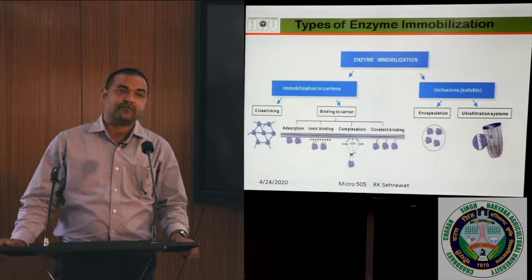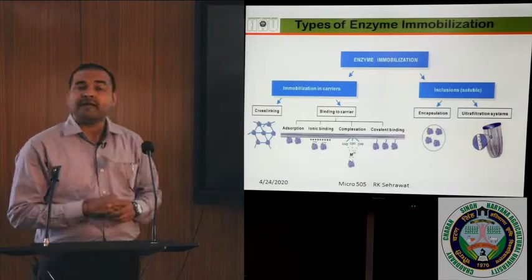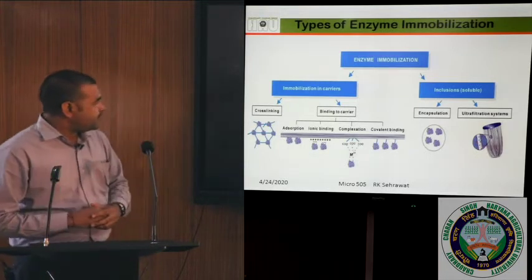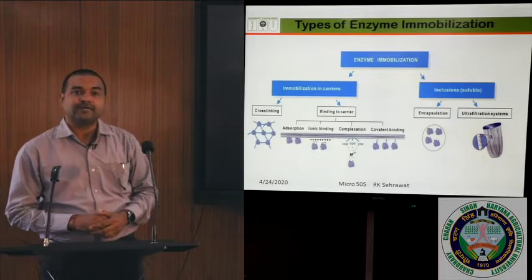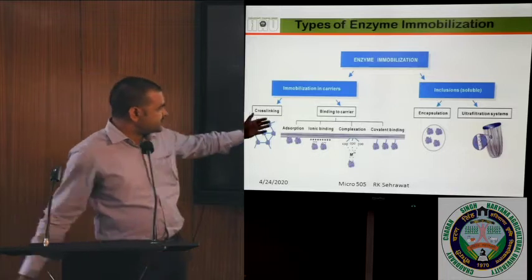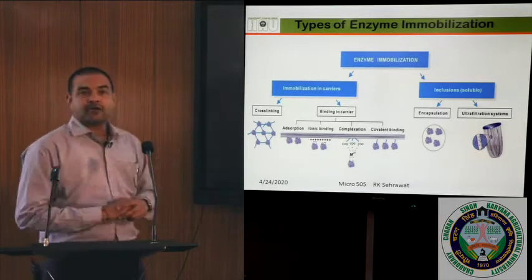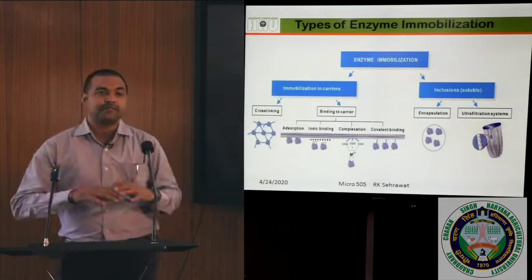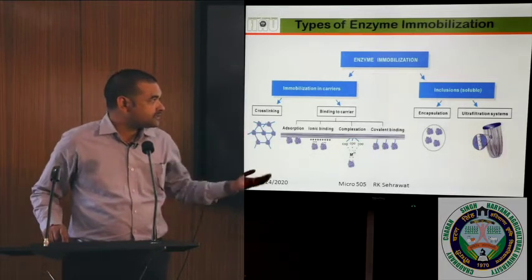Coming to the types of enzyme immobilization, enzyme immobilization is divided into two major categories: one where we are immobilizing on the carriers, and the second where the enzyme is included in a particular carrier, which can be a soluble one. Immobilization on the carrier includes cross-linking — a widely used standard method — and binding to the carrier, which includes both physical and chemical interactions: adsorption, ionic binding, complexation, and covalent bonding. In inclusions, we have encapsulation in alginate beads and ultrafiltration systems where membranes harbor the enzymes for use in continuous systems.